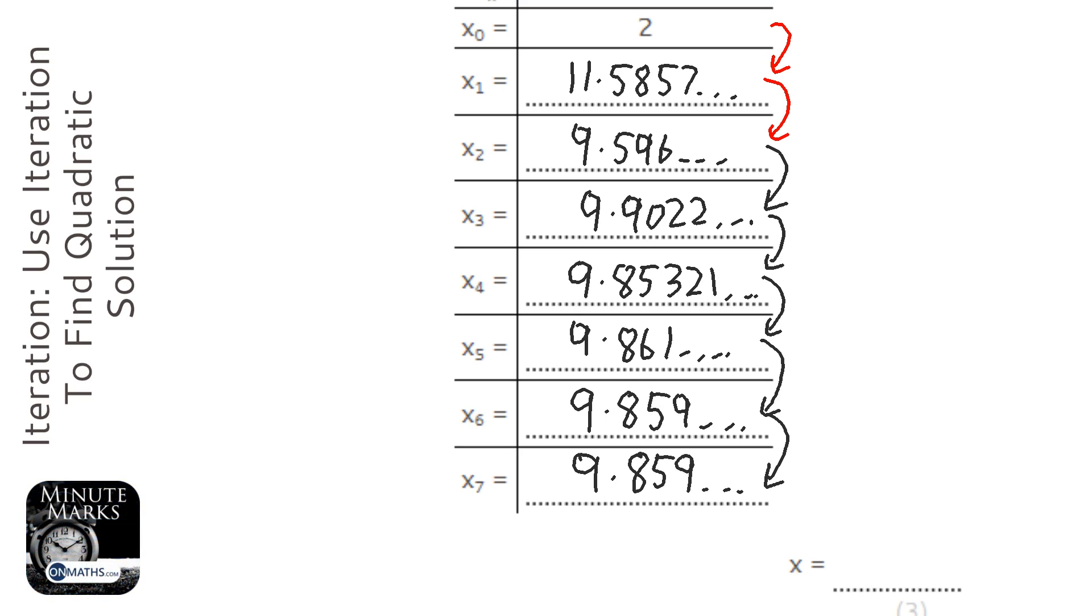Every time you press equals, you can just keep pressing equals and it will get closer and closer to a number. It might appear on the calculator that it stays at the same number at a point, but actually the number that's changing is so far down the decimal places that you just can't see it anymore.